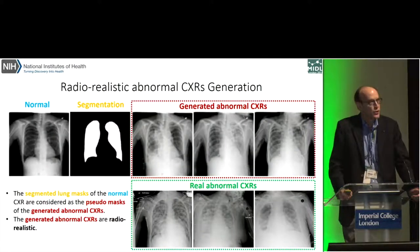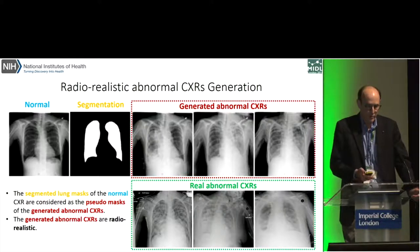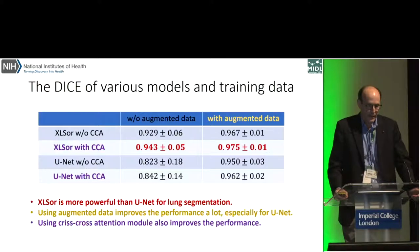This slide shows examples of the original normal chest radiograph on the far left and the initial segmentation mask. And then on the far right on the top row, generated abnormal chest radiographs. If you compare those to real abnormal chest radiographs on the bottom row, you can see that the generated ones are radiorealistic. You can see the heart and abdominal structures, ribs, shoulders, and so forth in the generated abnormal radiographs.